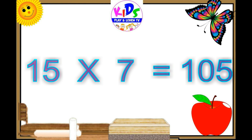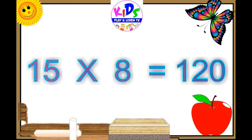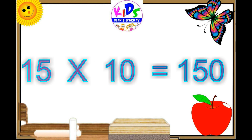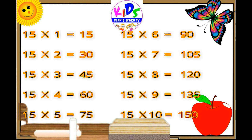15 sixes are 90, 15 sevens are 105, 15 eights are 120, 15 nines are 135, 15 tens are 150. Let's repeat: 15 ones are 15, 15 twos are 30, 15 threes are 45, 15 fours are 60, 15 fives are 75, 15 sevens are 105, 15 eights are 120, 15 nines are 135, 15 tens are 150.